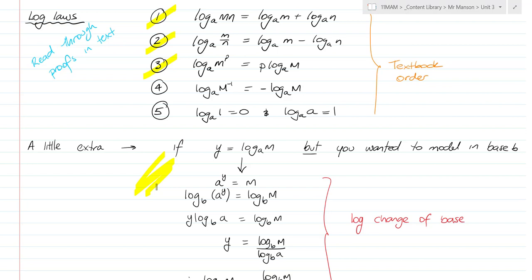If you've got log base of something to a power, you can bring that power out the front. If you have m to the power of negative one, this one's in your textbook, the negative one comes out the front making it negative. And log base a of one is zero and log base a of a is one. So they're the things we learnt before and you've seen them.